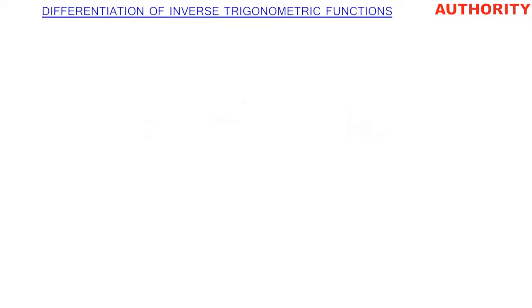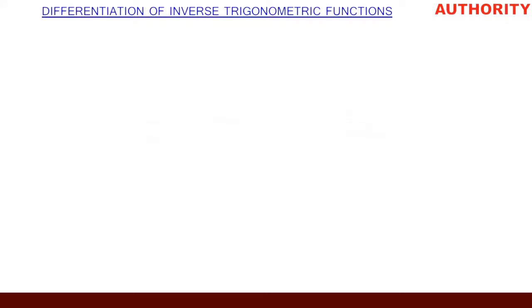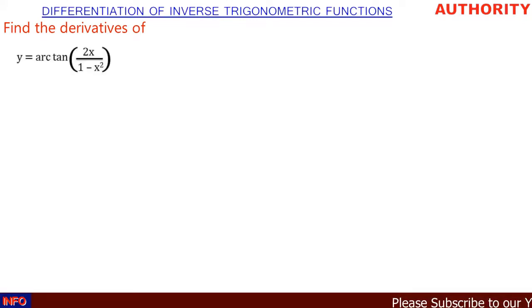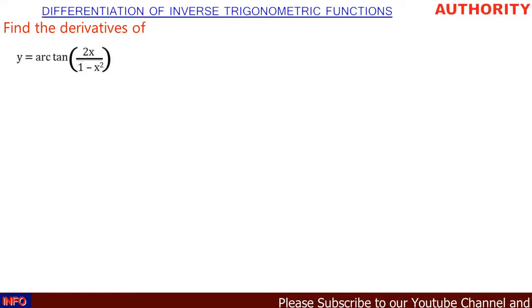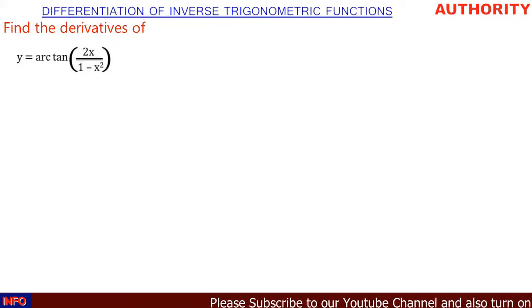Alright, welcome. Let's take this question on the differentiation of inverse trigonometric functions. This question says: find the derivative of y equals arctan of 2x all over 1 minus x squared.